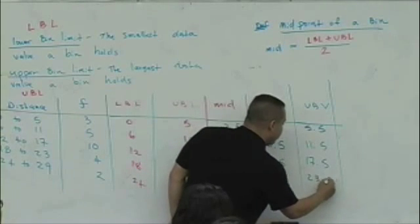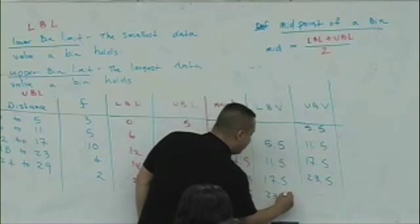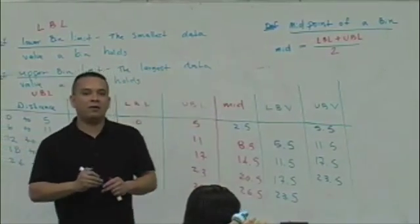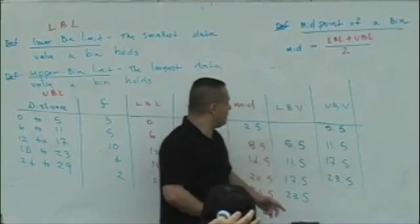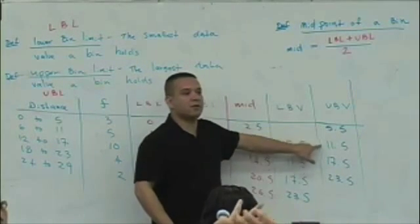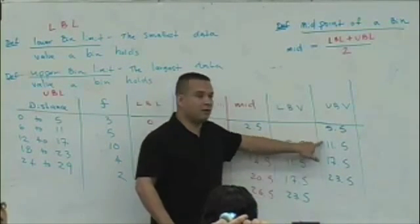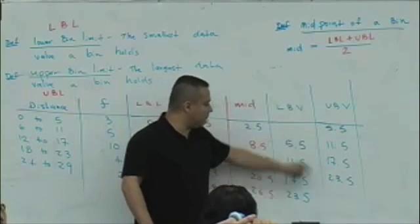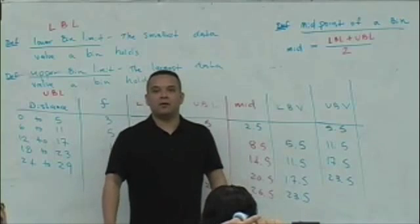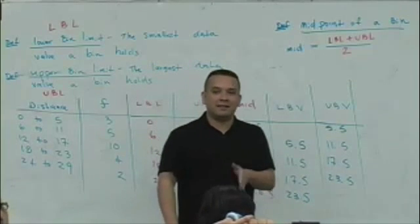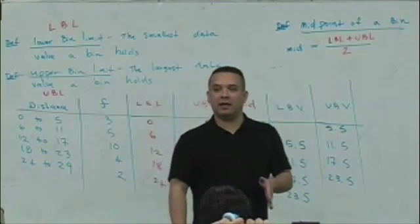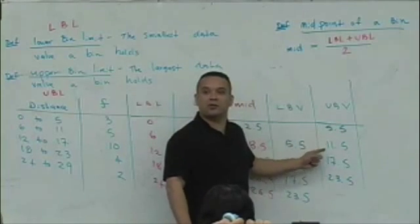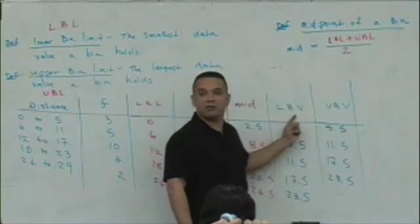Do you guys notice something interesting happening here? What was the bin width again? Six. You guys notice what's the difference between these two numbers? The difference here? And here? Here? Well, it's the same numbers. So what's happening is the same exact thing. That bin width can also be used to determine boundary values as well.